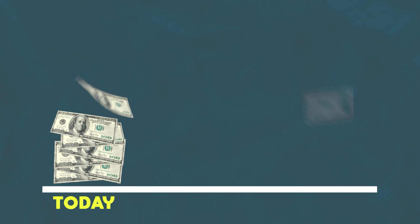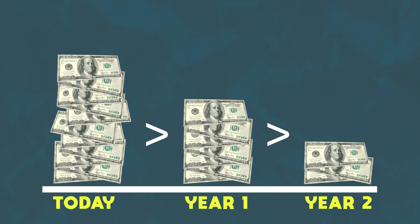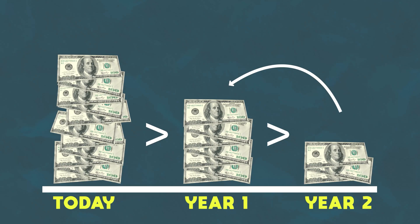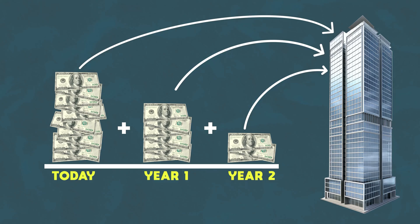So it follows that the cash flows you will receive in the future are worth less than cash flows you can receive today. And the further out the cash flow is, the less that cash flow is worth. A hundred dollars today is worth more than a hundred dollars a year from now, and a hundred dollars a year from now is worth more than a hundred dollars two years from now. This is why when you value a business using a DCF, you take all of their future cash flows, discount each one back to its present value, then add them up. That gives you the enterprise value of the business, or in other words, how much the business is worth.